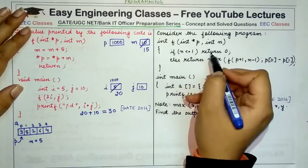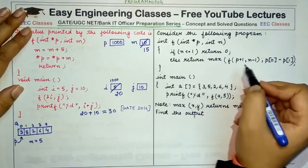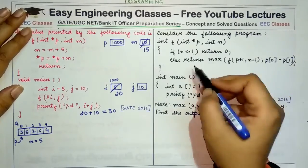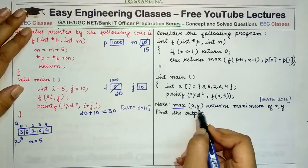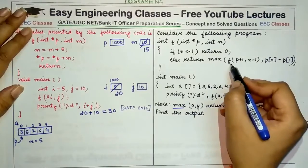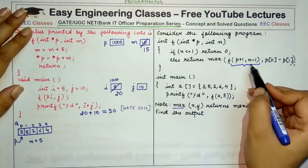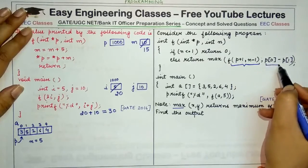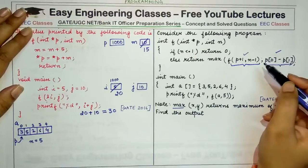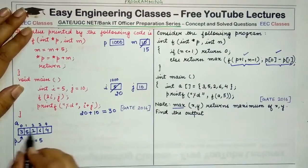We go to else, which says to return max of f(p+1, n-1) and p[0] minus p[1]. The note says max of two values returns the maximum. So we first compute the recursive call f(p+1, n-1), then compute p[0] minus p[1], and compare the two values to return the maximum.